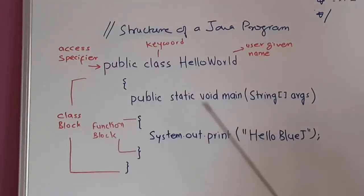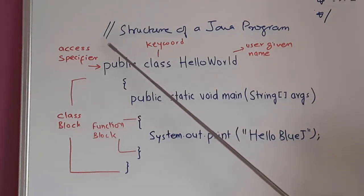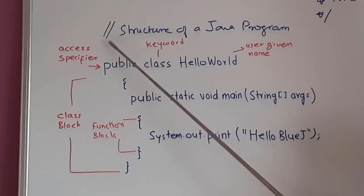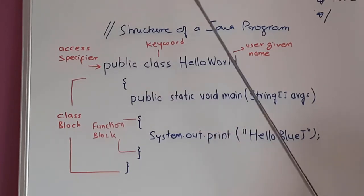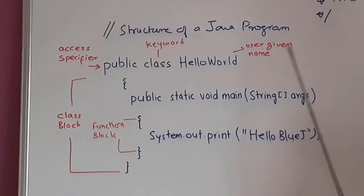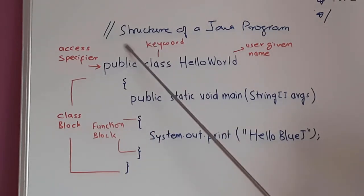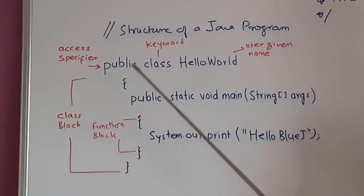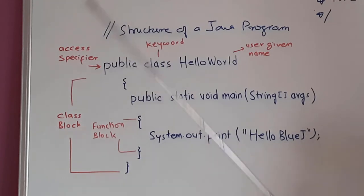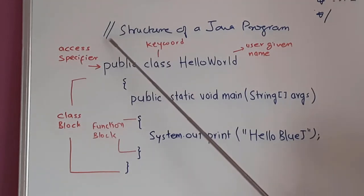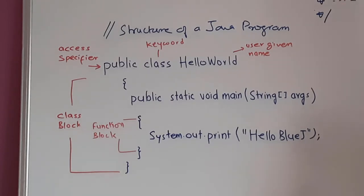This is our very simple program. We start our program with double forward slashes, which means it is a comment. The text after the double forward slash will not be included in the execution of the program — it will be treated as a comment. If you want to write a single-line comment, you can use double forward slashes at the beginning of each line.